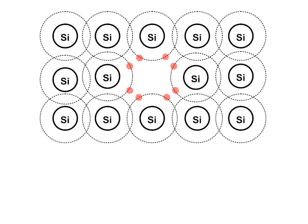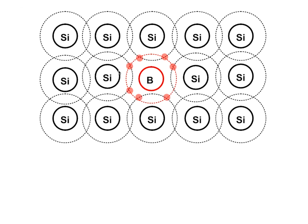The other option is to replace silicon with boron. Boron has only three electrons in its valency band, so this area is neutral but we now have a hole. If you remember from the previous video, with an applied potential difference, conduction can occur by the movement of holes. Electrons shift from bond to bond into the neighbouring hole, creating a new hole at the previous position. So the hole effectively moves in the opposite direction. By either adding phosphorus or boron, we have altered the conductivity of our silicon.